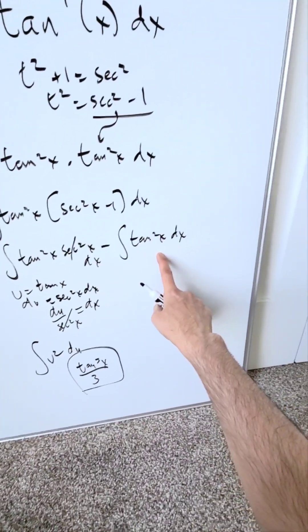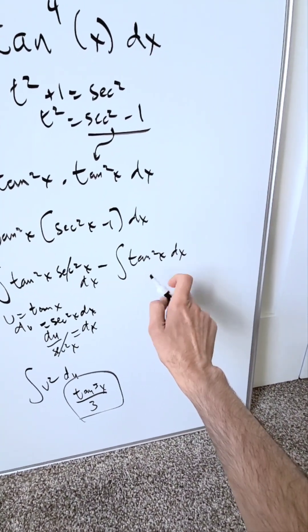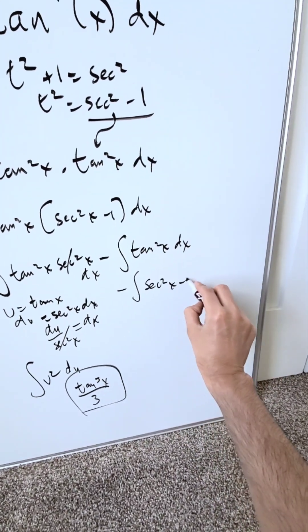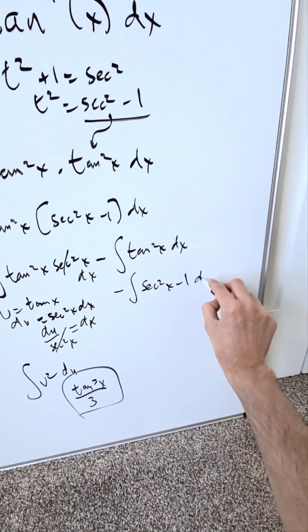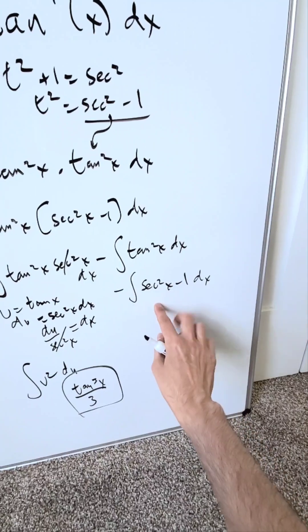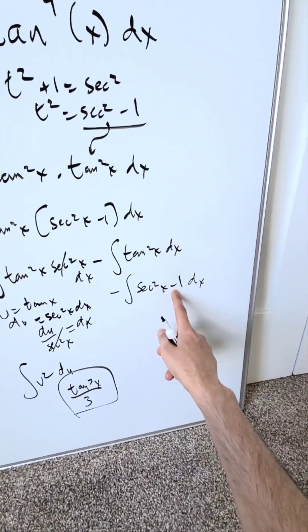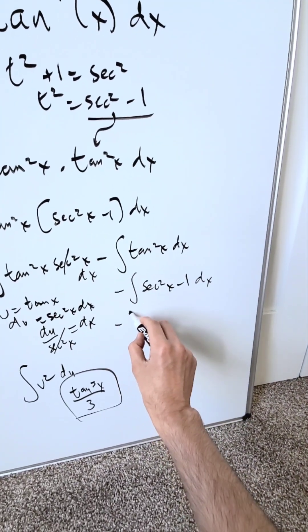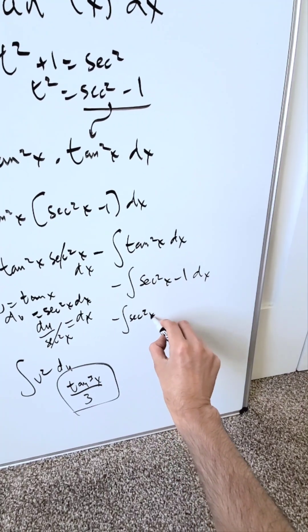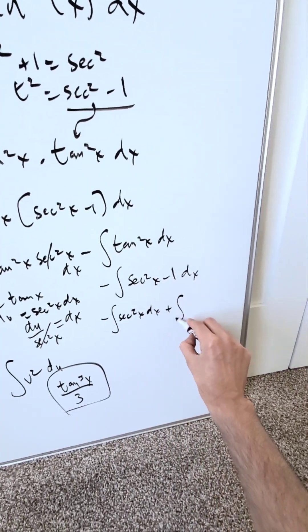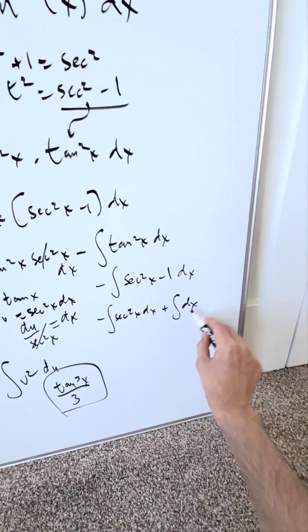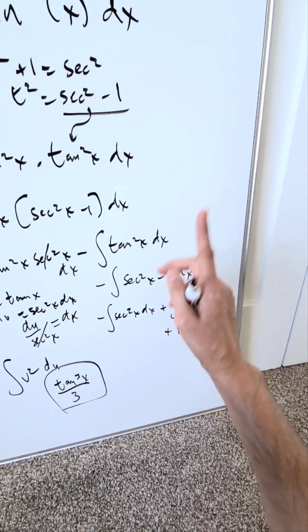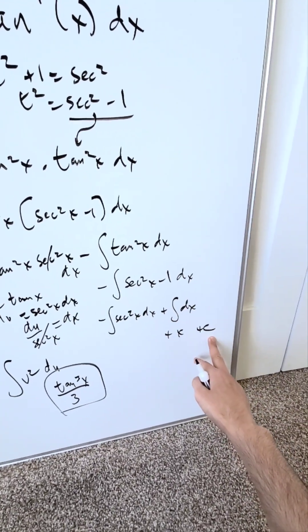Now focus on the remaining integral. Tan²(x) again equals sec²(x) minus 1 dx, with a minus sign sitting out front. Separating into two independent integrals: minus the integral of sec²(x) dx, plus the integral of dx. From the integral of dx we get plus x plus C.